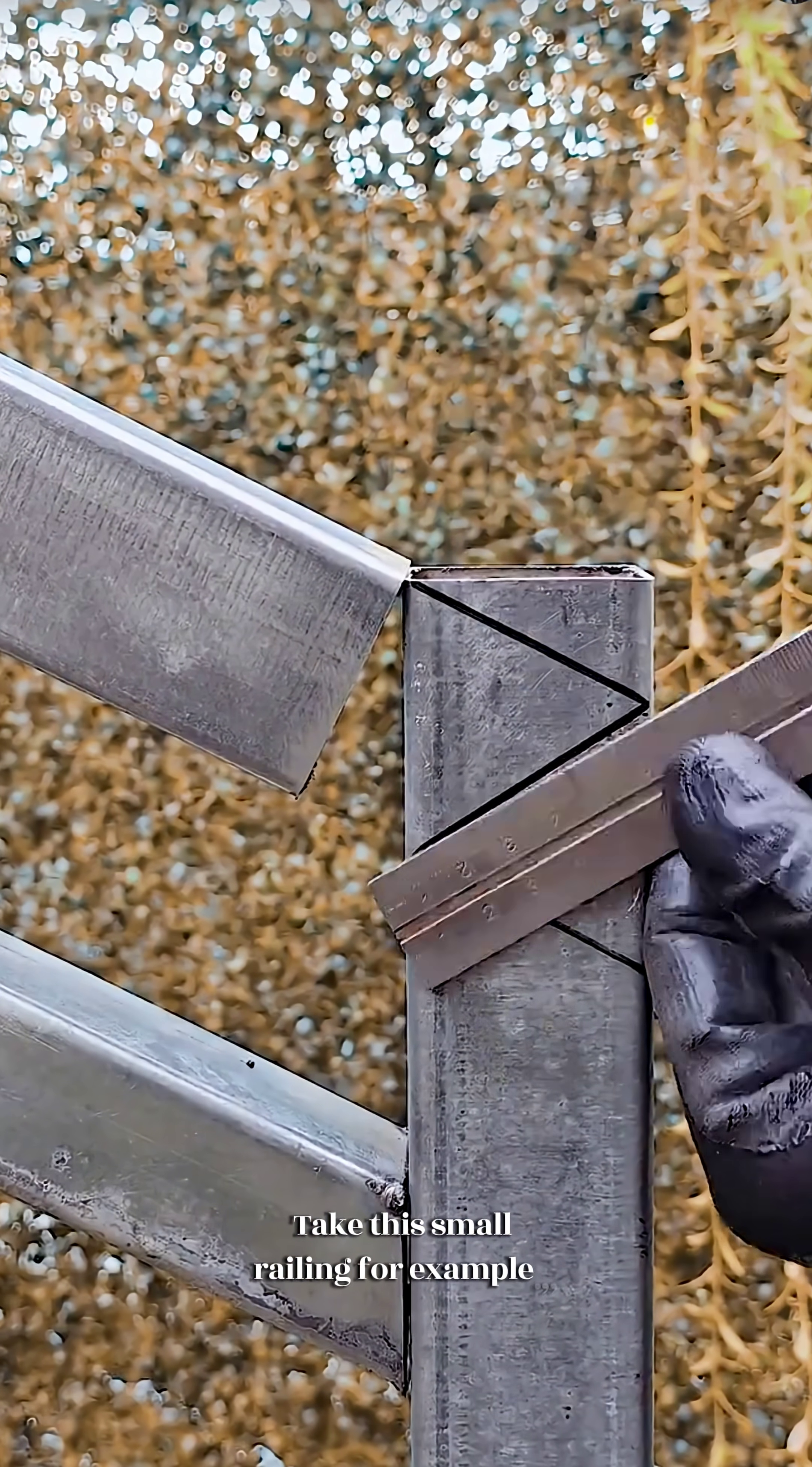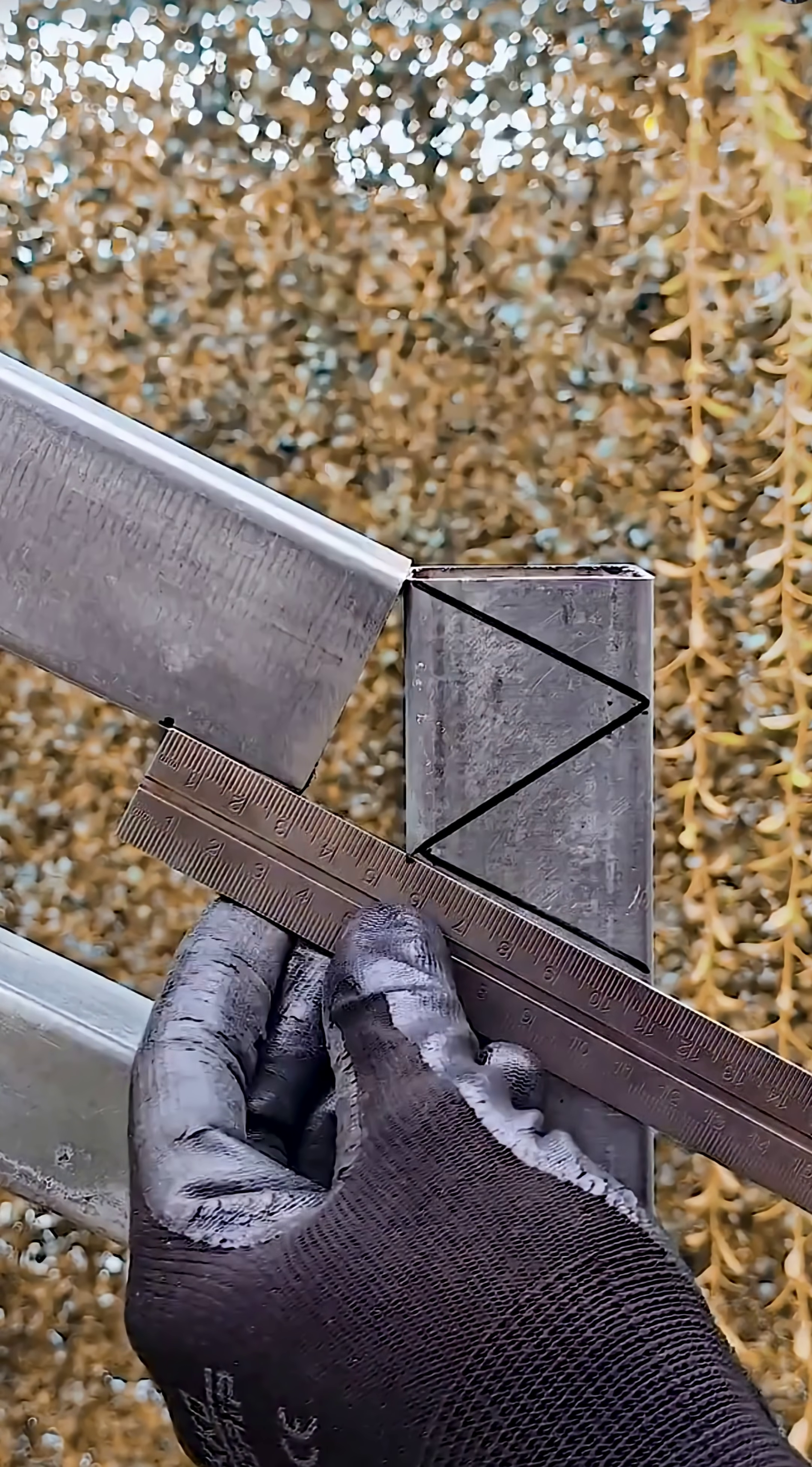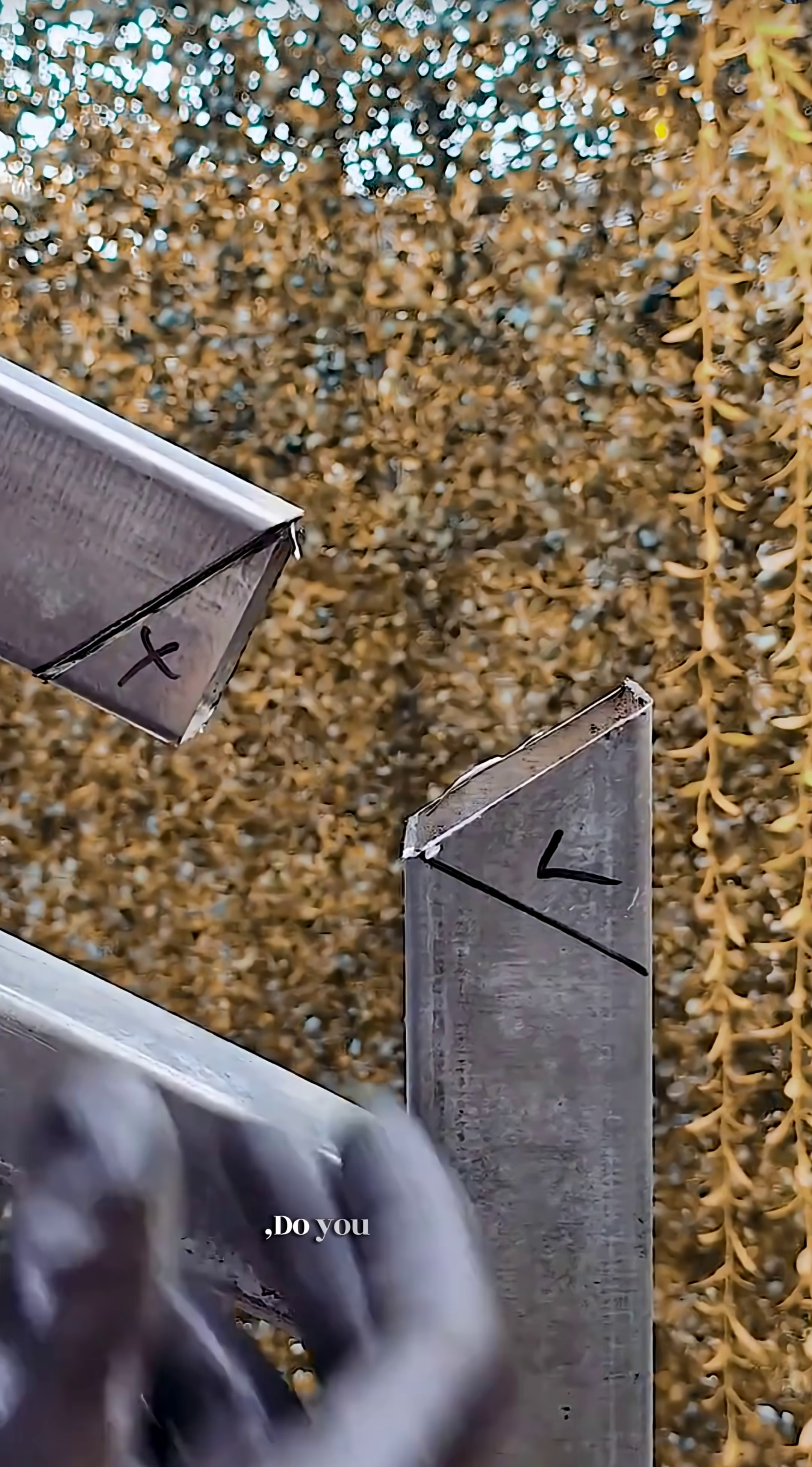Take this small railing, for example. How do you handle the joint between the bevel and the post? Again, just make sure it's not too big or too small, and then draw a small bevel. Do you think that's okay?